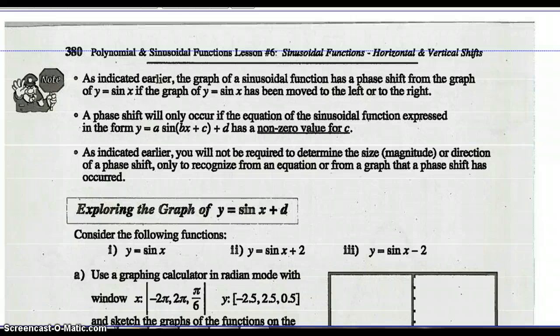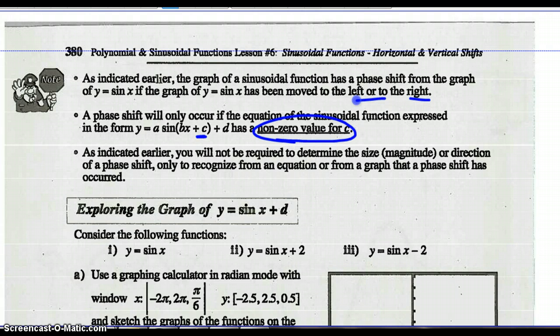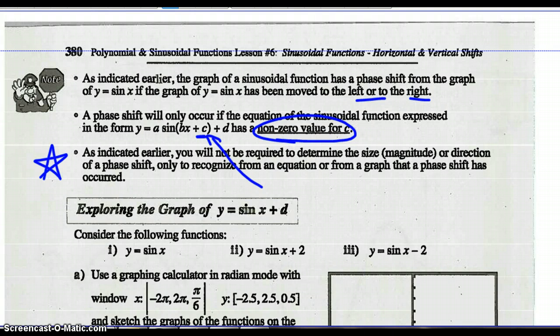Here's the rest of this lesson. A little note: if we have a phase shift from the graph of y cosine to another graph of y cosine, we move to the left or to the right. A phase shift occurs if c is anything but zero. For this course, we're not going to need to know the size or direction — we just have to recognize that if c is anything but zero, there's going to be a phase shift.